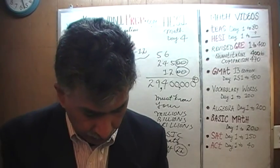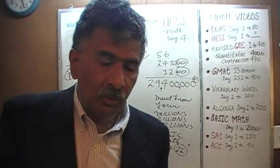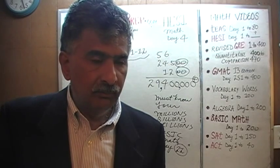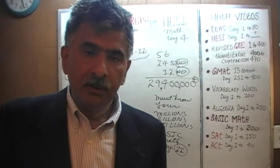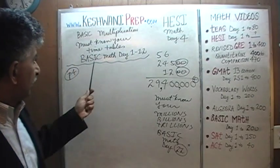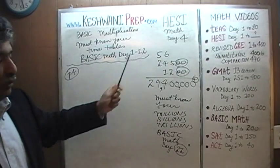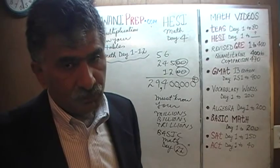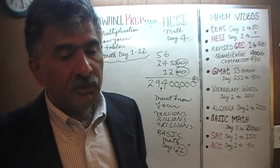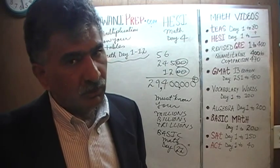The topic that we are dealing with is basic multiplication. In order for us to do our multiplication efficiently, we must know our timetables by heart. If you do not know your timetables one through twelve, on my channel you will find a series called Basic Math. On day number one through twelve, we learned our timetables. Watch those videos day one through twelve — it will help you memorize the timetables in an efficient, easier way.